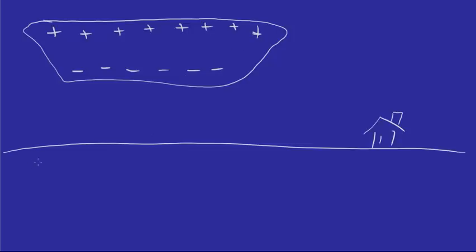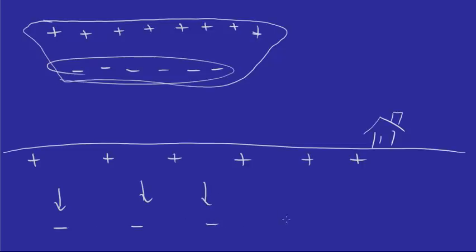The cloud has positive and negative charges. The Earth also has positive and negative charges. Since like charges repel one another, the negative charges at the Earth's surface get pushed down and repelled by the cloud's negative charges. You end up with negative charges at the bottom of the cloud and positive charges at the Earth's surface.